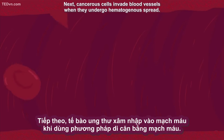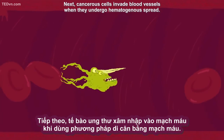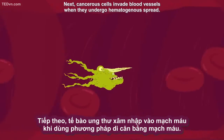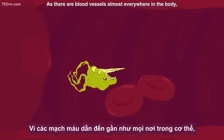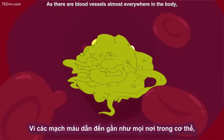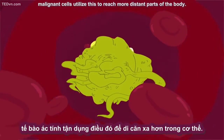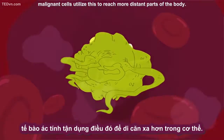Cancerous cells invade blood vessels when they undergo hematogenous spread. As there are blood vessels almost everywhere in the body, malignant cells utilize this to reach more distant parts of the body.